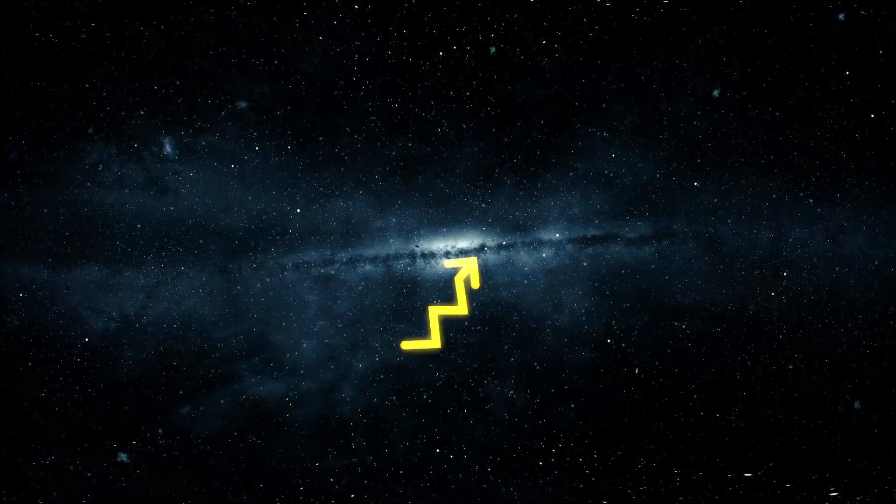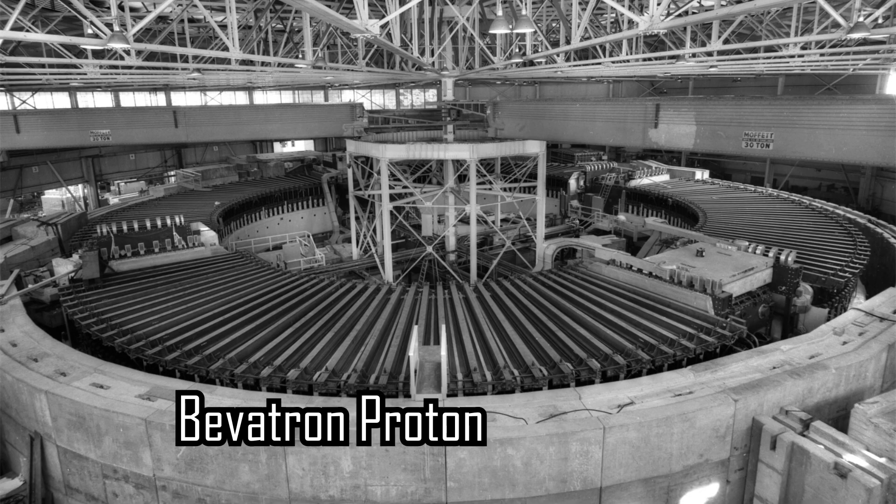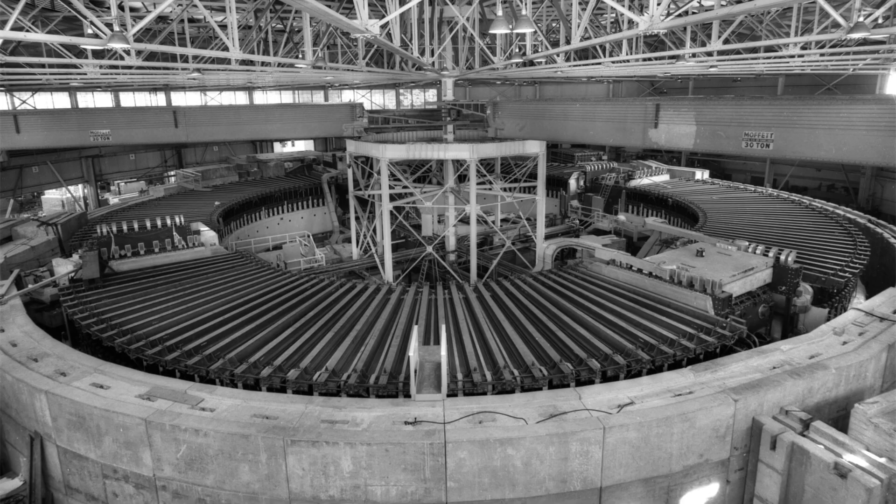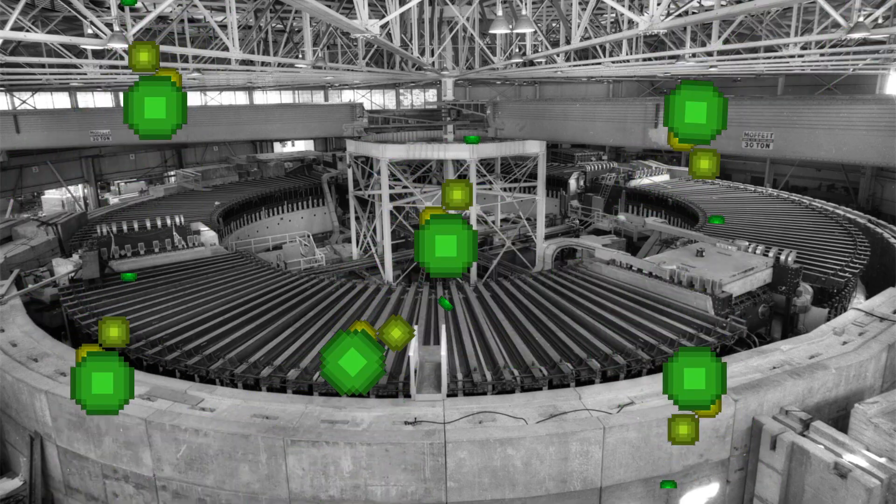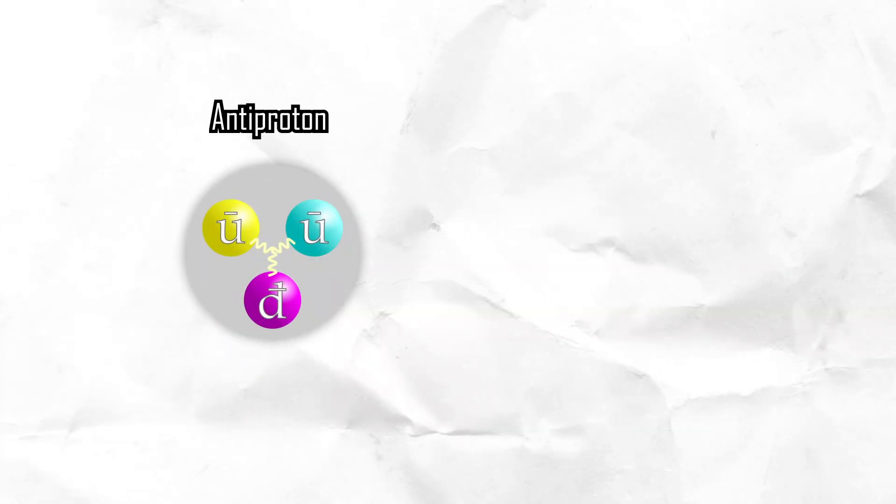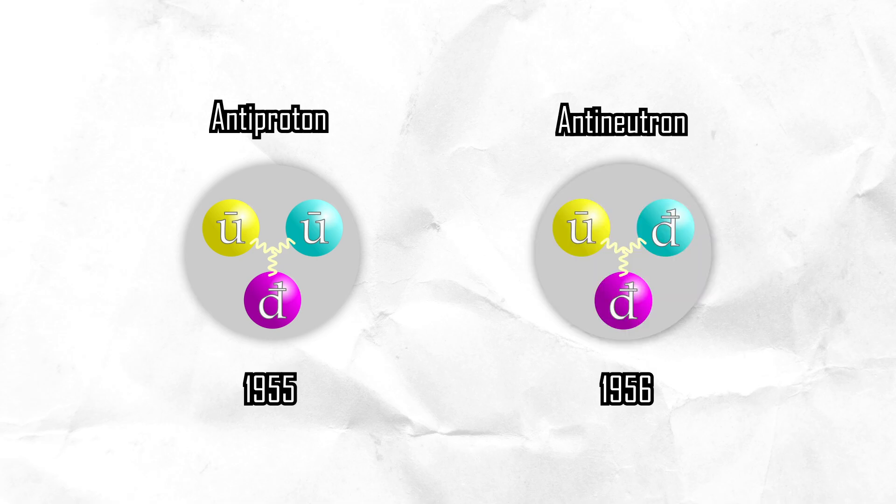Cosmic rays, moving at near-light speeds, create a natural particle collider. In 1954, the bevatron proton accelerator enabled humans to generate conditions for antiparticle creation. The anti-proton was discovered in 1955, followed by the anti-neutron in 1956.